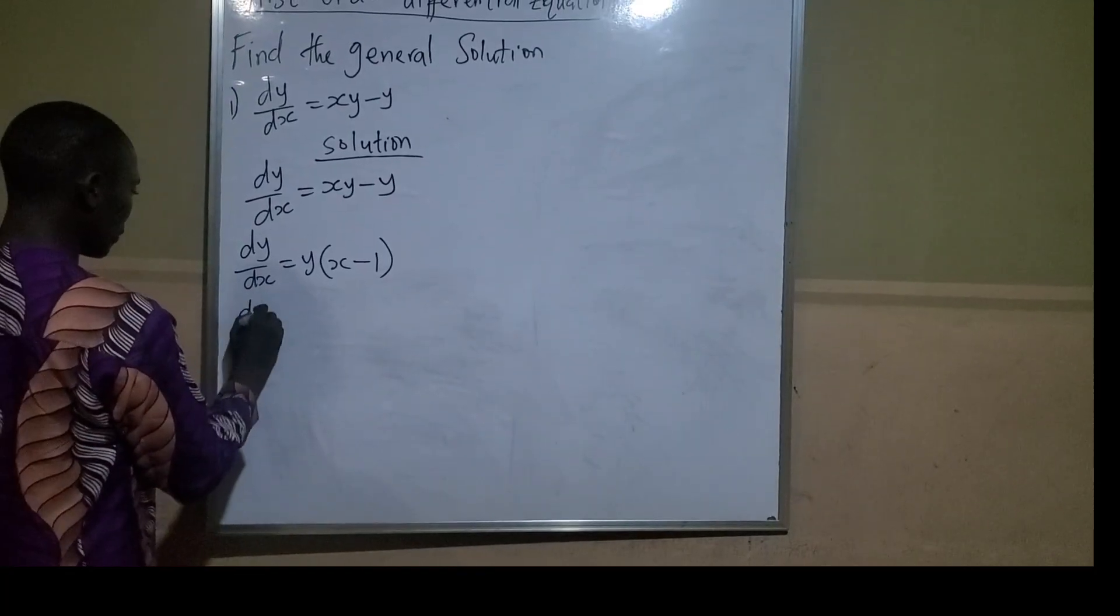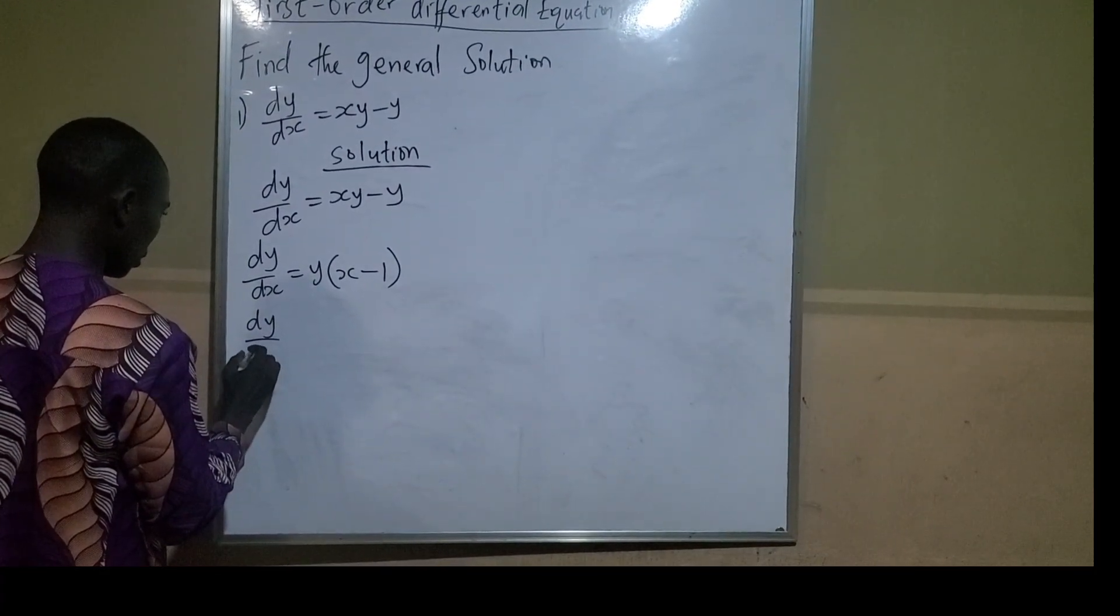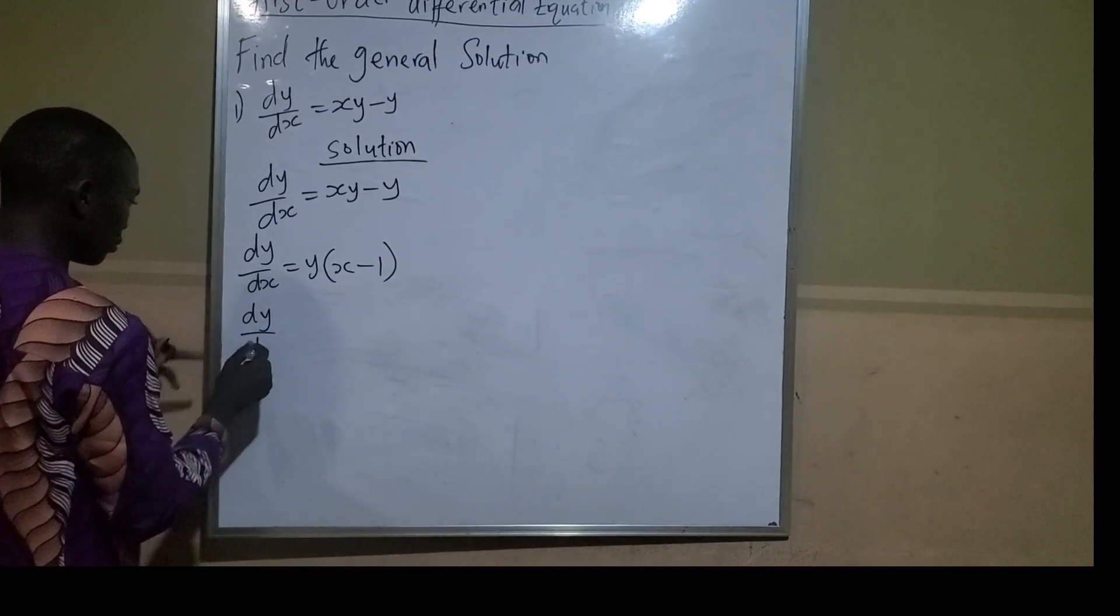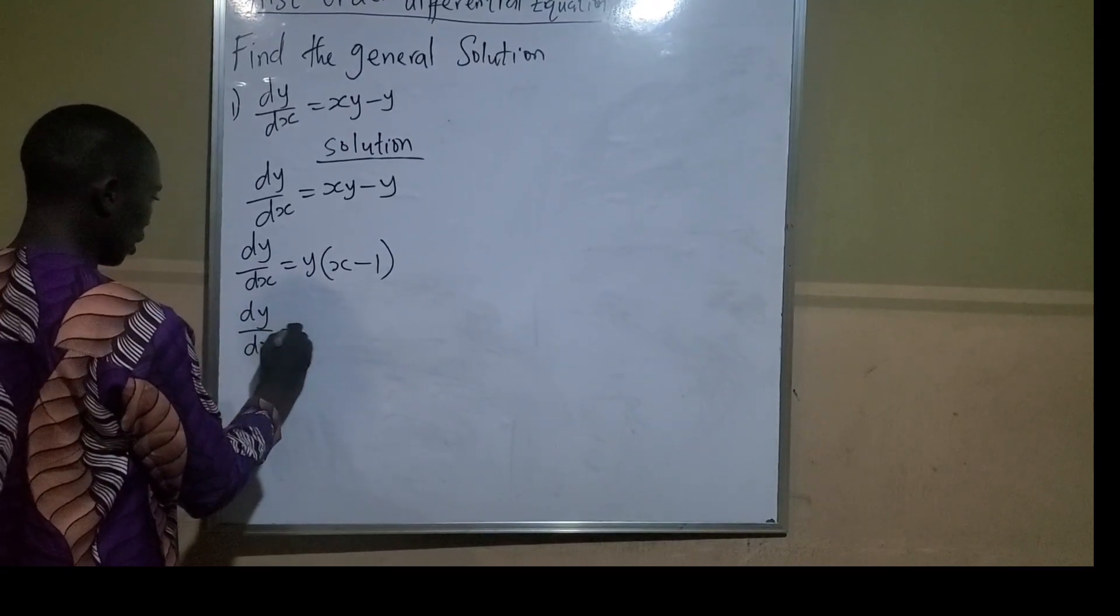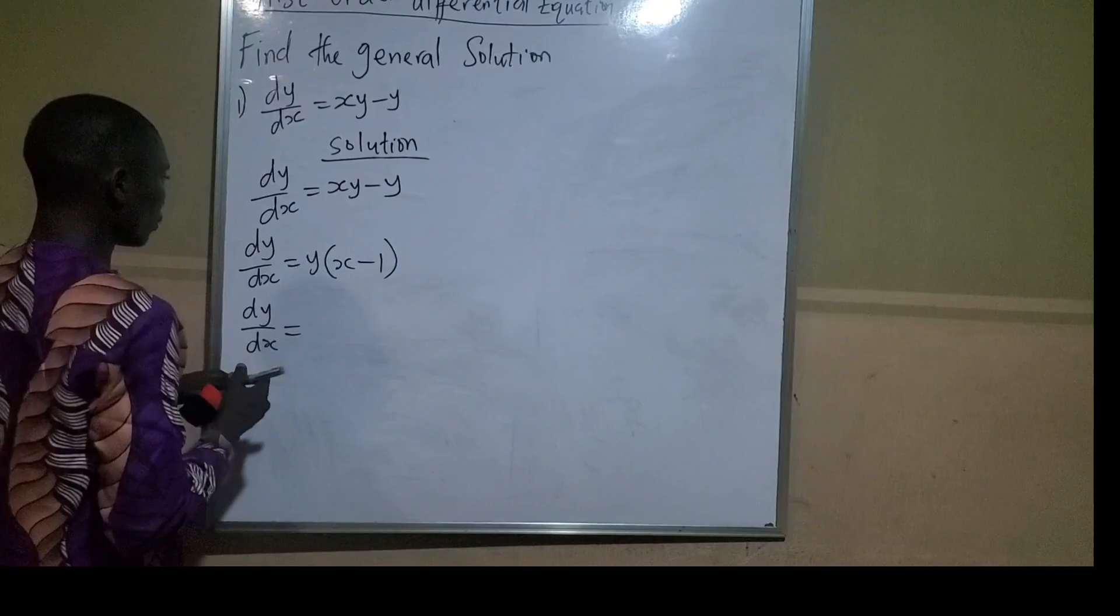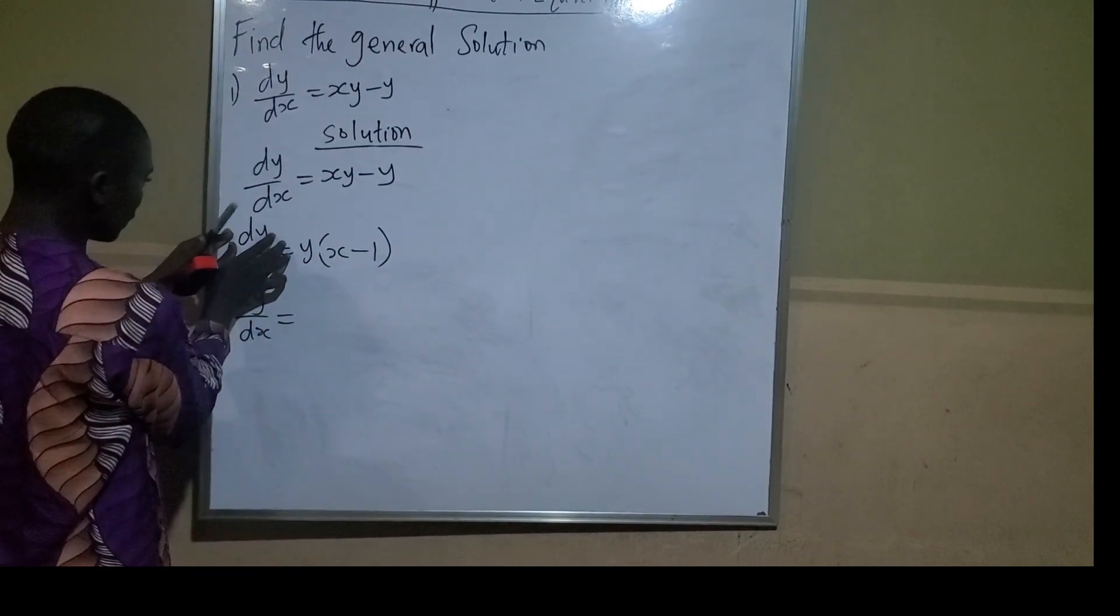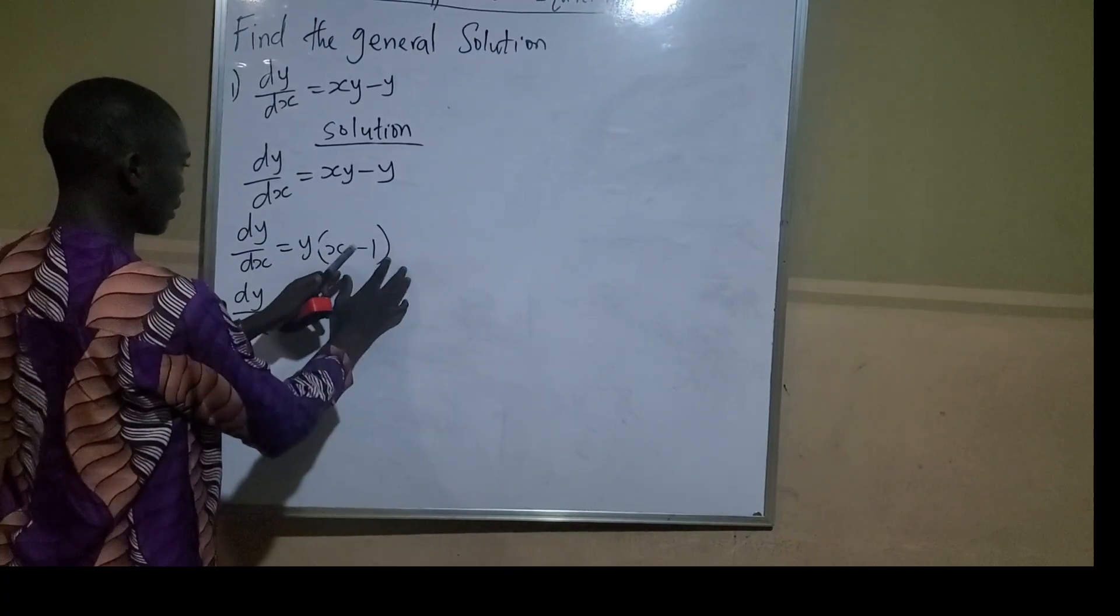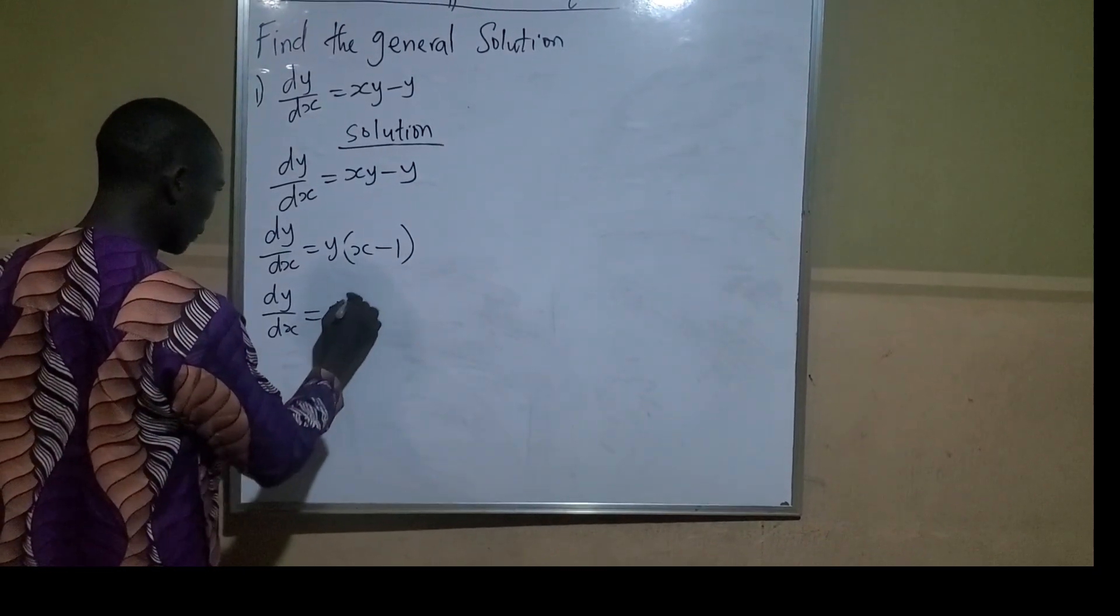The next thing to do is to bring where there is y to the y side, and where there is x to the x side. I'll make sure this y leaves this part and joins the dy here, and this dx leaves this place and joins where there is x.